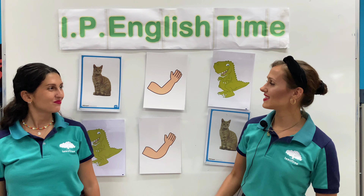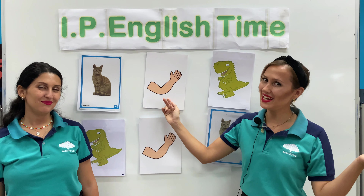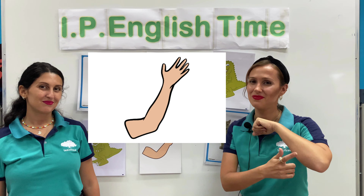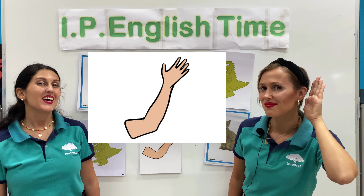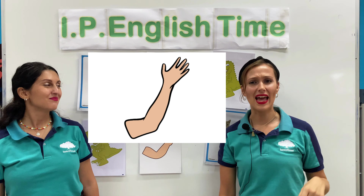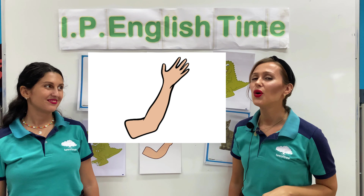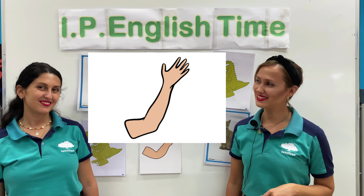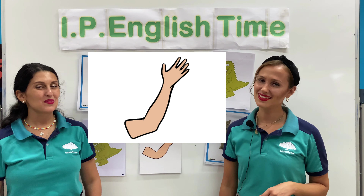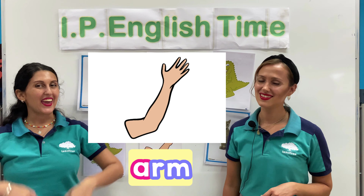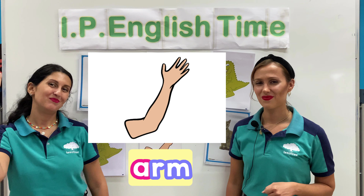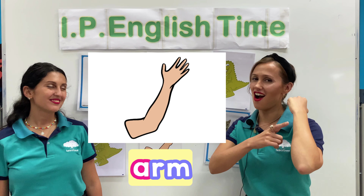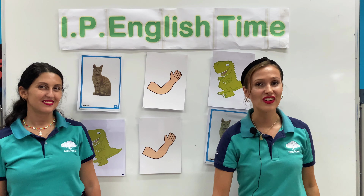Let's have a look at our next picture. What is it? It's an arm. Now I want you to think — what is the first letter? Letter A. A is for arm.